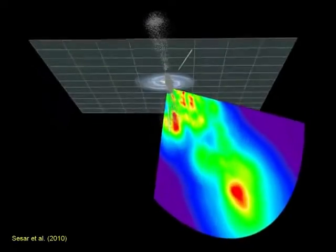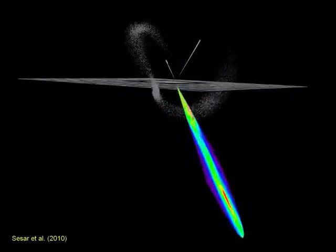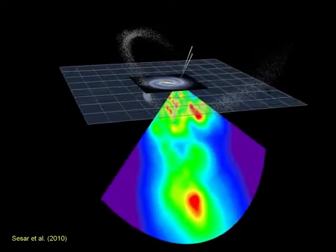Note the abundant substructure. The white dots show the Sagittarius dwarf galaxy and its tidal streams, as modeled by David Law and collaborators.